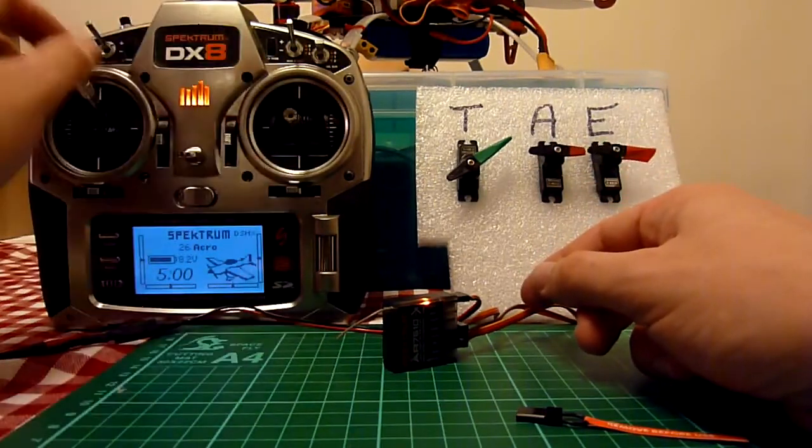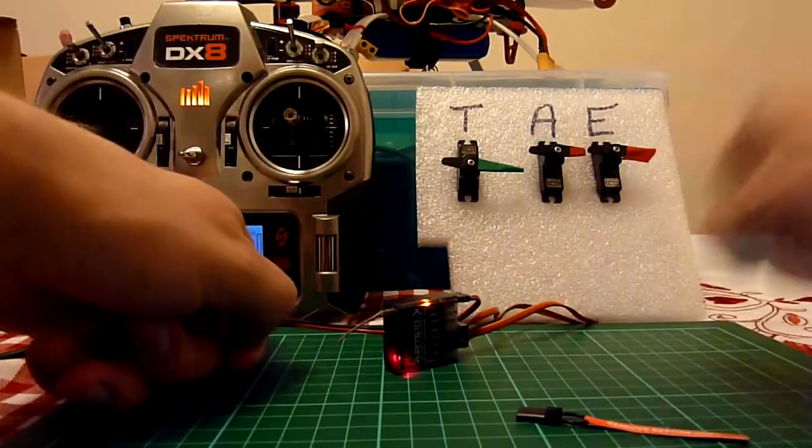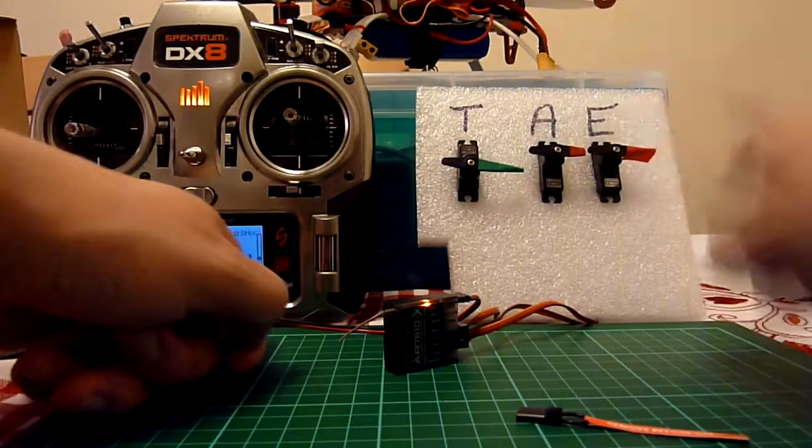If you don't, it will just hold the last position. Now if the last position was that you were rolling, then as soon as you lose signal it will carry on rolling and it will just roll into the ground.